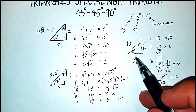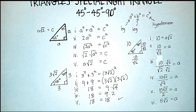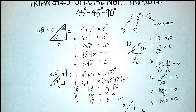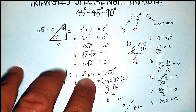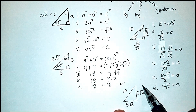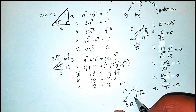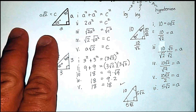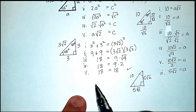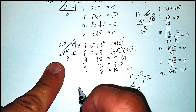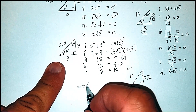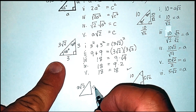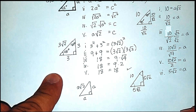So this triangle, knowing only the hypotenuse is 10 and that it's a 45-45-90, gives us sides of five radical two and five radical two. In summary, in a 45-45-90 triangle, the hypotenuse is a radical two, and each of the legs is just a.